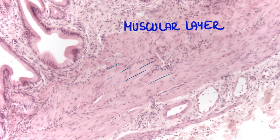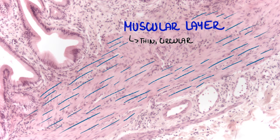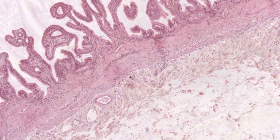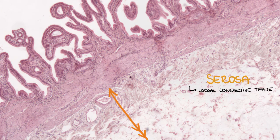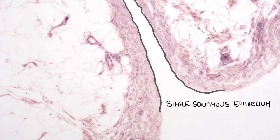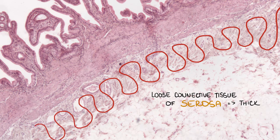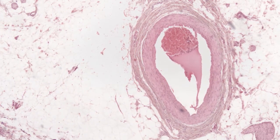The muscular layer is thin and circular, containing smooth muscle cells. The serosa is composed of loose connective tissue with abundant adipocytes, covered by simple squamous epithelium called mesothelium. The loose connective tissue of serosa is rather thick, and that's why a layer between the muscular layer and serosa called subserosa is described in some textbooks. There are also large vessels which are branches of the cystic artery.